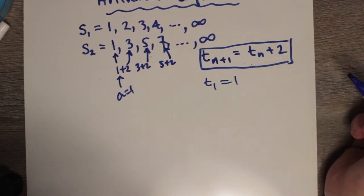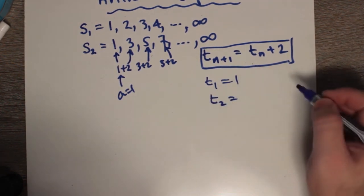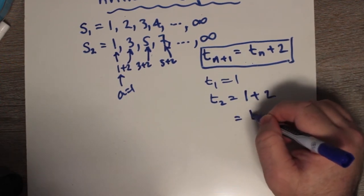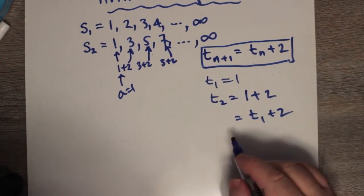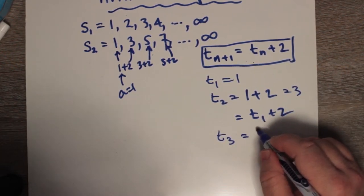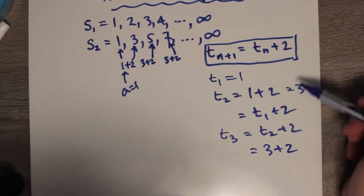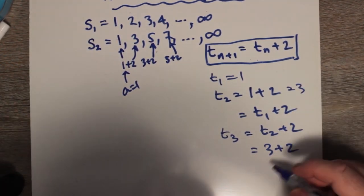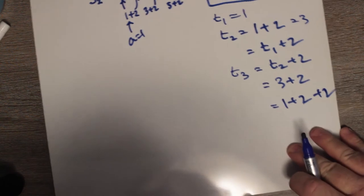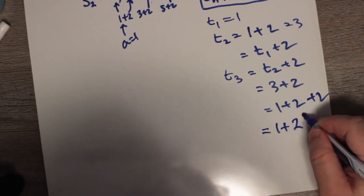T1 is 1 — our first term. T2 is really 1 plus 2, or T1 plus D. T3 by this logic is T2 plus 2, which is 3 plus 2. But if we break the 3 down, remembering 3 was 1 plus 2, to which we add 2, we get 1 plus 2 multiplied by 2.